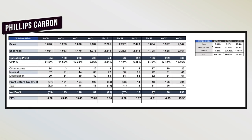Now we will do a profit and loss analysis. Looking at sales, in 2009 this company's sales were 1,076 crores and went up to 2,400 crores in 2015. In 2016-17 we did not see growth, but then in 2018 this company's sales increased by almost 30% — a positive sign, because recently demand for carbon and graphite products has increased and this company saw a jump in terms of sales.